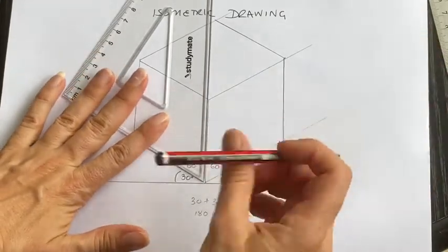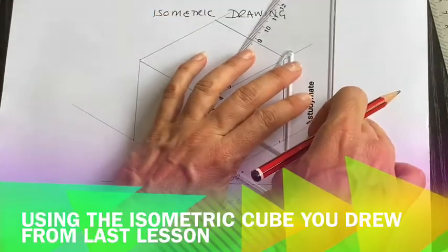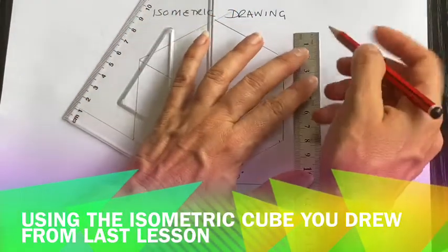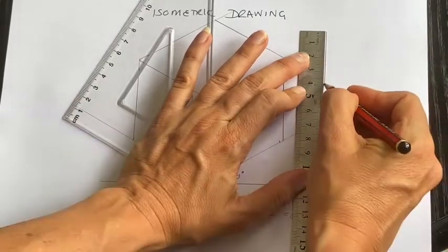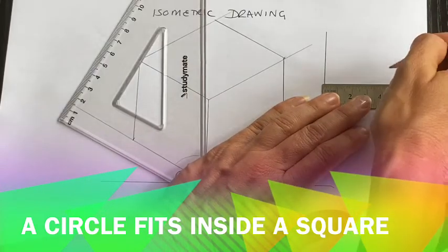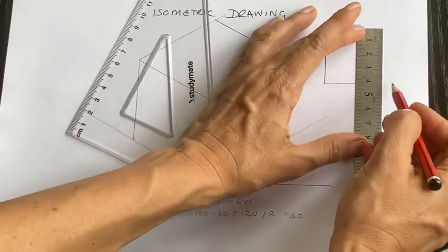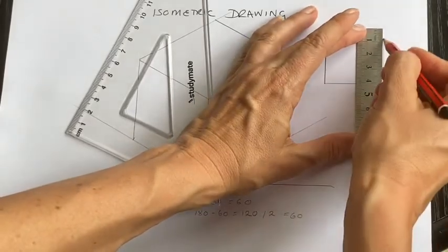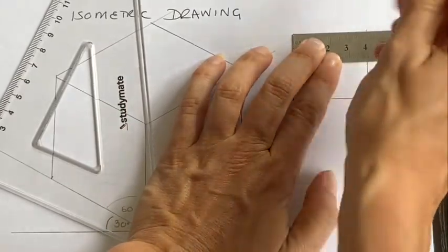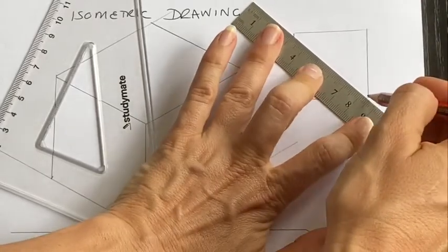Isometric drawing lesson two, we're going to learn how to draw isometric circles in this lesson. So just to demonstrate, I'm going to draw a square first of all, 40 by 40. Try and get it as neat as I can. Inside a square you can fit a circle, so I just divide this square.